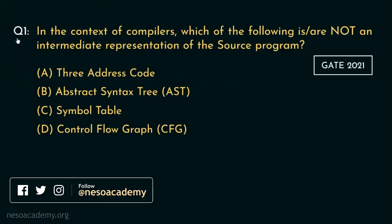Consider the first question. It came in GATE 2021. In the context of compilers, which of the following is or are NOT an intermediate representation of the source program? And we are given these four options. So we are supposed to determine which one of these four is not an intermediate representation of the source program.